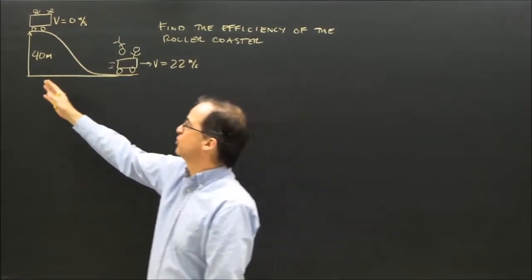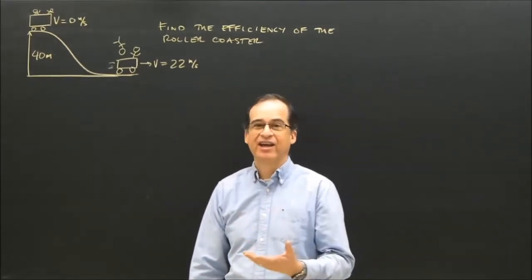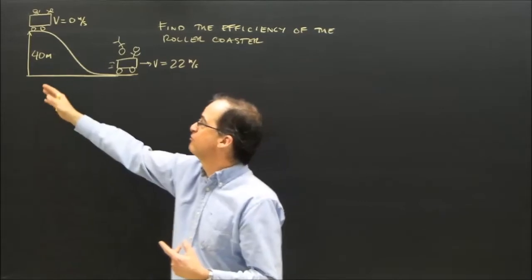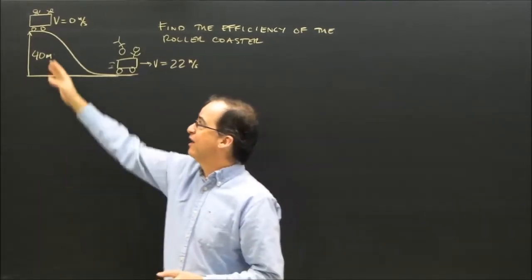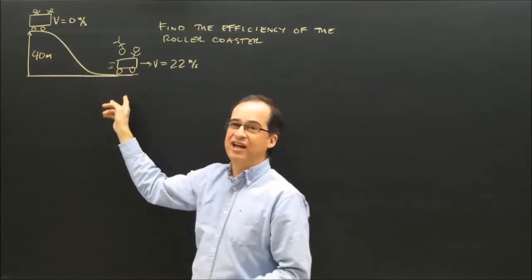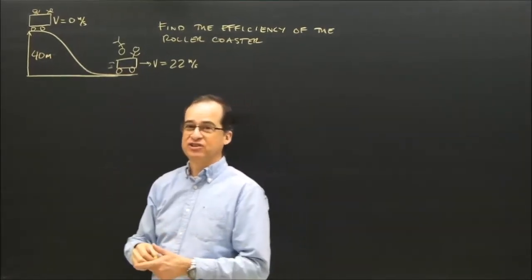The roller coaster has gravitational energy. But since it's not moving at the start, its kinetic energy at that point is zero. I can figure out how much energy the roller coaster has here. That energy is converted into kinetic energy, but some of it is lost. So the question is, how efficiently does it work?